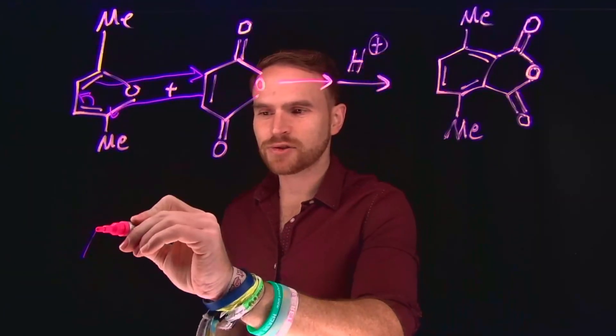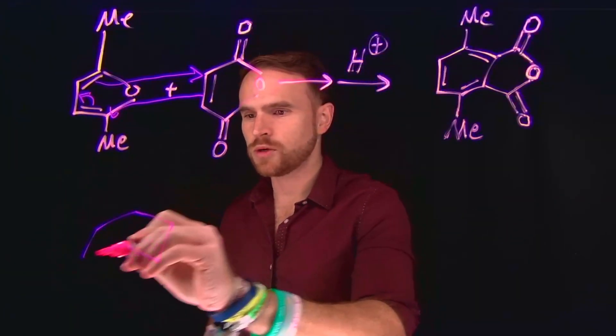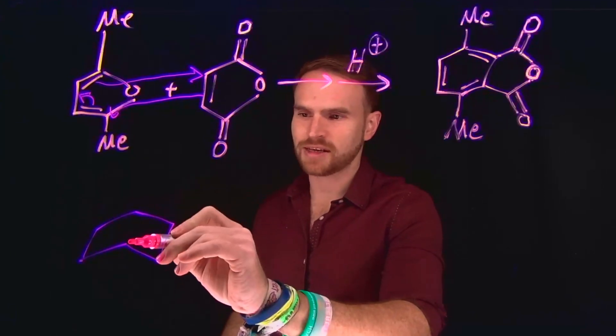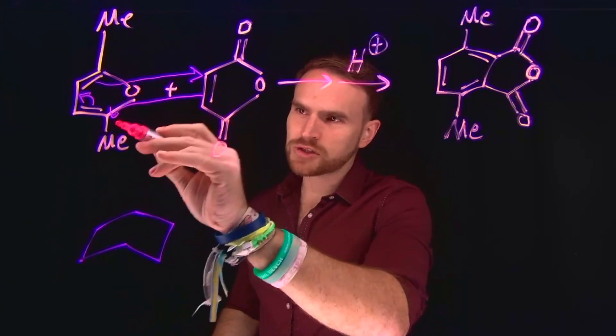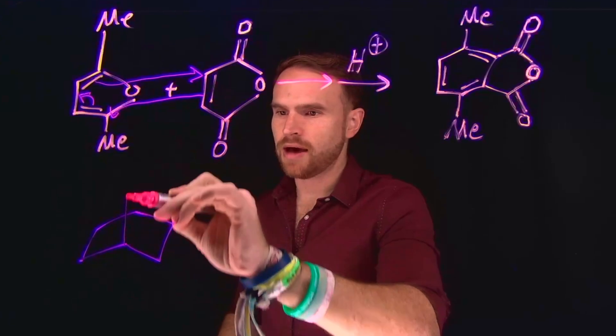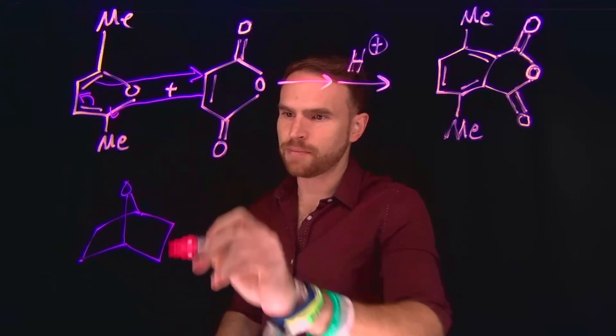And this is going to result in the Diels-Alder product being formed. So we will start with our cyclohexane, keeping in mind that this is also going to be a fused ring system where you have an oxygen at the top of this five-membered ring.